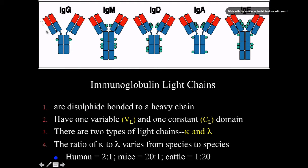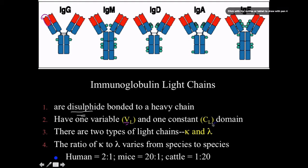Light chains are a small segment, also joined by disulfide bonds. They have one variable domain (VL) and one constant domain. The constant domain connects to the heavy chain via a disulfide bond. There are two isotypes of light chains: kappa and lambda. For the purposes of this course there's no distinction between the two — they do the same job and have very similar functions.